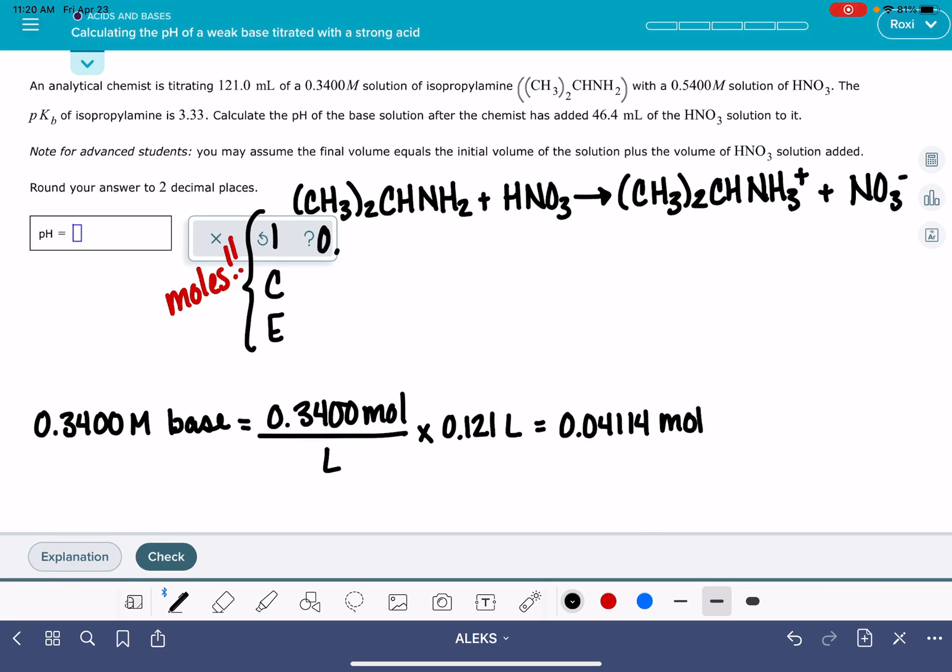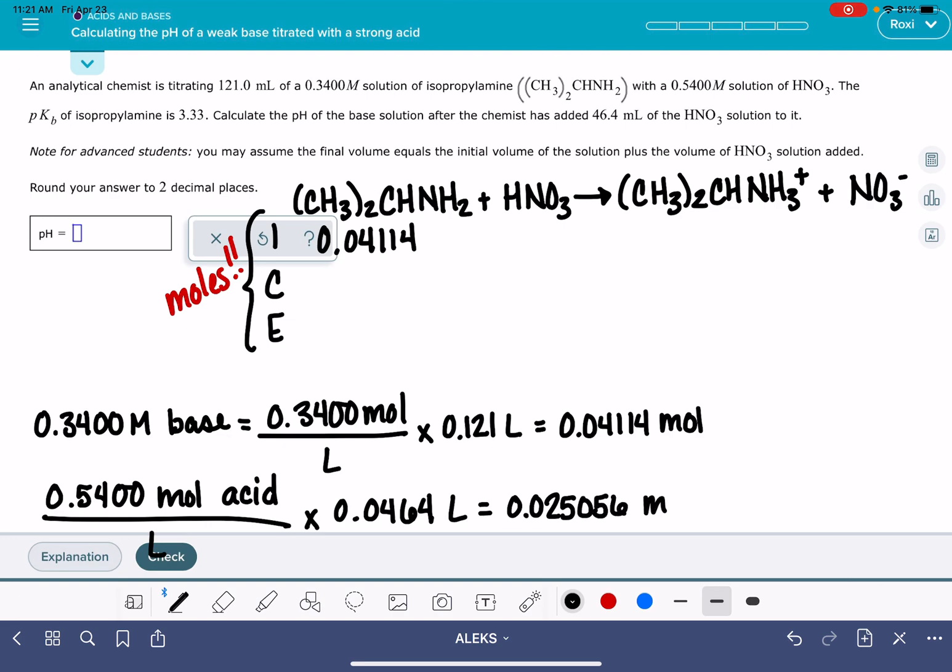We'll put that into the initial spot for our base, and then we're going to do the same thing for our acid. We're going to calculate the number of moles of acid that we have. The molarity of the acid is 0.5400 molar. That means that we have 0.5400 moles of the acid per liter, and we have 46.4 milliliters of the acid, which is 0.0464 liters. 0.5400 times 0.0464 is 0.025056 moles. That's how much acid we have.